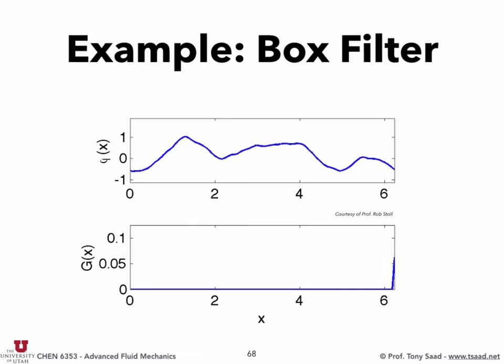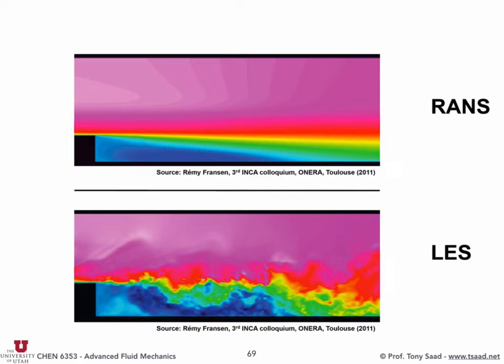In practice we never apply this filter explicitly — the grid automatically resolves it for you. Here's another example: a RANS simulation versus LES for flow over a backward-facing step. With RANS you just capture what happens on average. With LES you capture some structures, but not the full DNS. If you do a DNS you capture even finer structures.